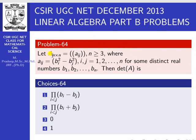Let A be the n by n matrix defined as aij, where n is greater than or equal to 3, and aij is defined as bi squared minus bj squared, for i, j equal to 1, 2, and so on to n, for some distinct real numbers b1, b2, and so on bn. Then the determinant of A is: first option, the product of bi minus bj over i less than j; second option, product of bi plus bj over i less than j; third option, zero; fourth option, one.